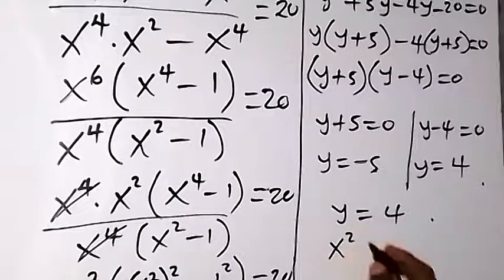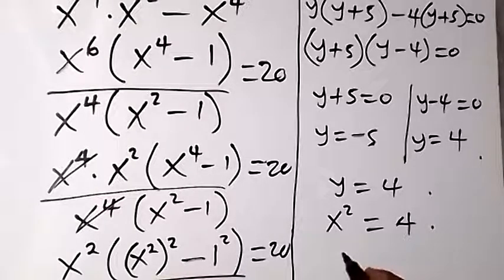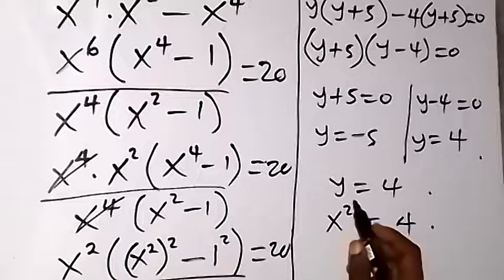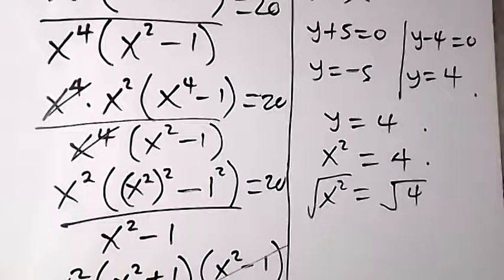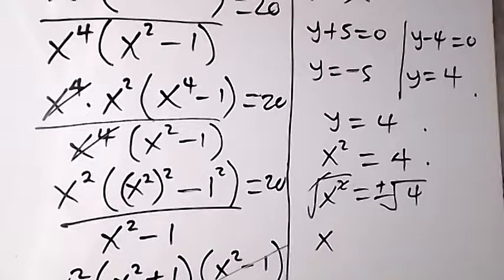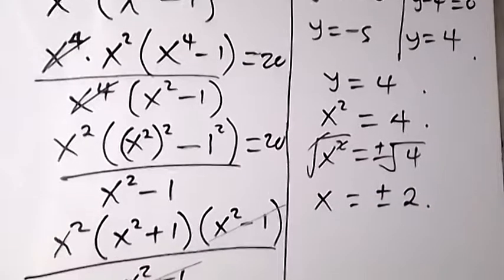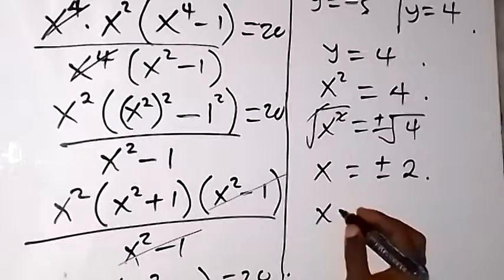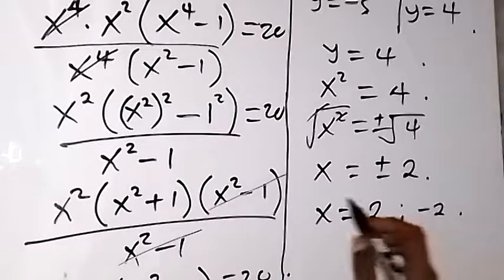From y = 4 and y = x^2, we have x^2 = 4. Taking the square root of both sides, the square root of x^2 equals the square root of 4, giving two possible solutions: x = +2 or x = -2.